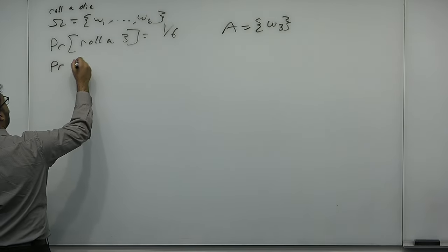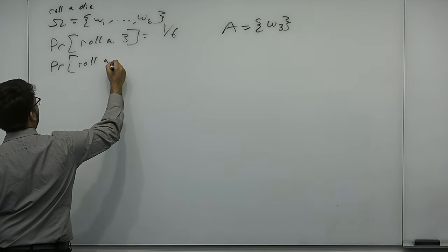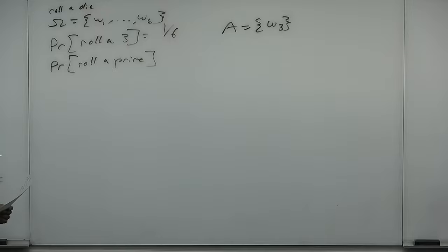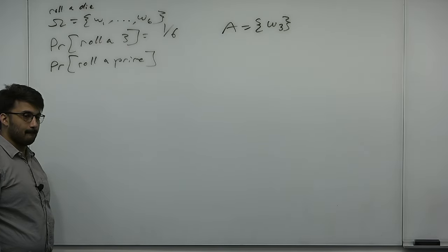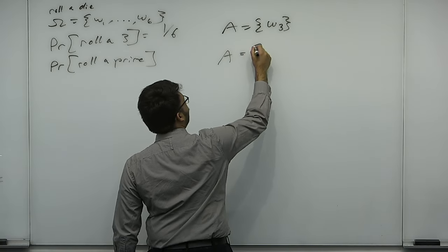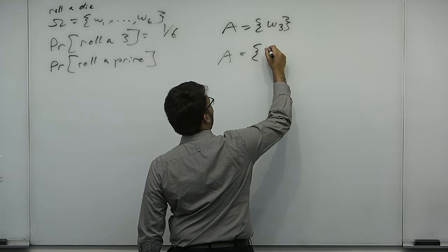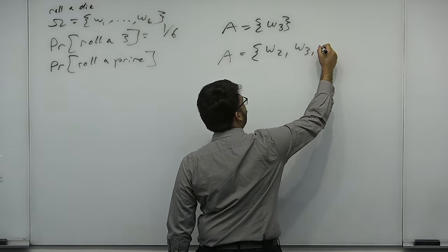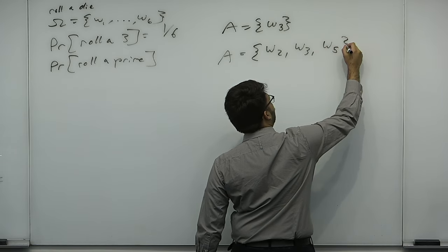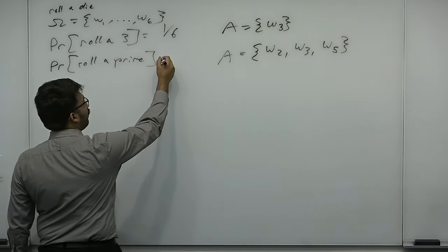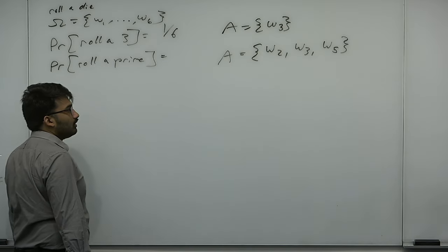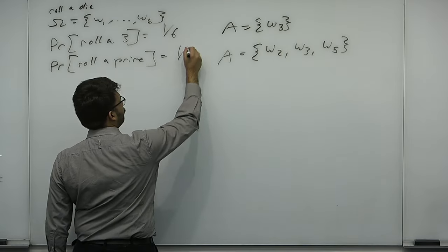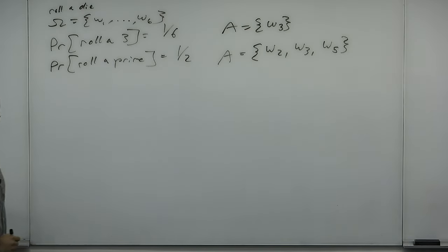What is the probability you roll a prime? Half. Why? Because the primes are 2, 3, and 5. Your set of possible outcomes is omega 2, omega 3, omega 5 — that's going to be 3 over 6, which is 1/2.